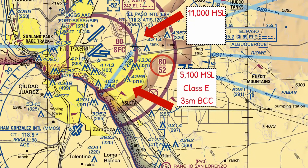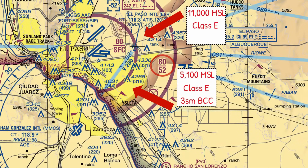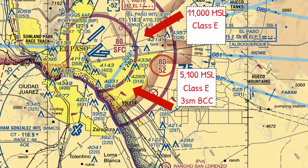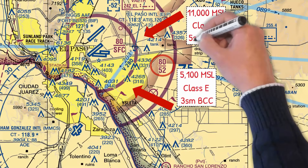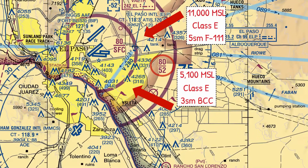One more example. What if you're right here at 11,000 feet MSL? What class airspace are you in and what are your visibility and cloud clearance requirements? Class E airspace above 10,000 feet MSL. And the visibility and cloud clearance requirements? Remember, F-111 above 10,000 feet MSL — five miles visibility, 1,000 feet below, 1,000 feet above, and one statute mile horizontally from any clouds.